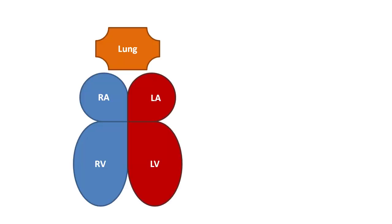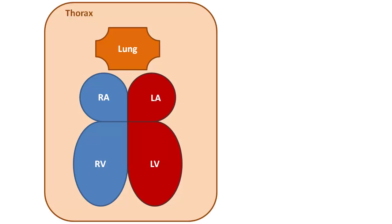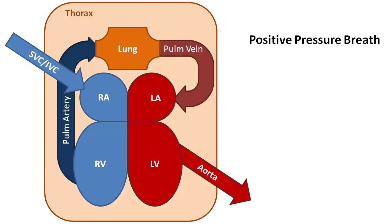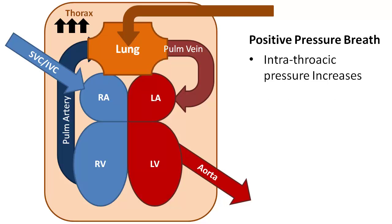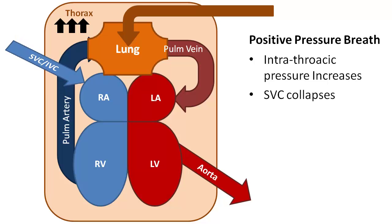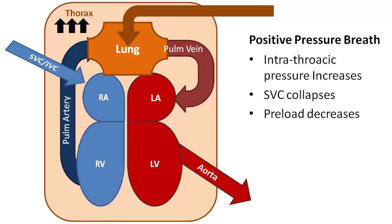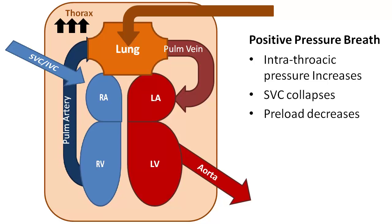We'll explain how these work by first reviewing the anatomy. The lungs and heart sit inside the thorax, and we have our pulmonary and systemic circulation. If we deliver a positive pressure breath, increasing the intrathoracic pressure collapses the superior and inferior vena cava, as well as the right atrium, right ventricle, and pulmonary artery. In other words, this decreases the preload volume on the heart.